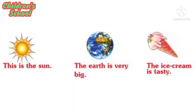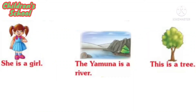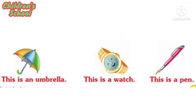This is the sun. The earth is very big. The ice cream is tasty. She is a girl. The Yamna is a river. This is a tree. This is an umbrella. This is a wash. This is a pan.